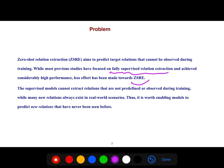The supervised models cannot extract relations that are not predefined or observed during training, while many new relations always exist in real-world scenarios. Thus, it is worth enabling models to predict new relations that have never been seen before.